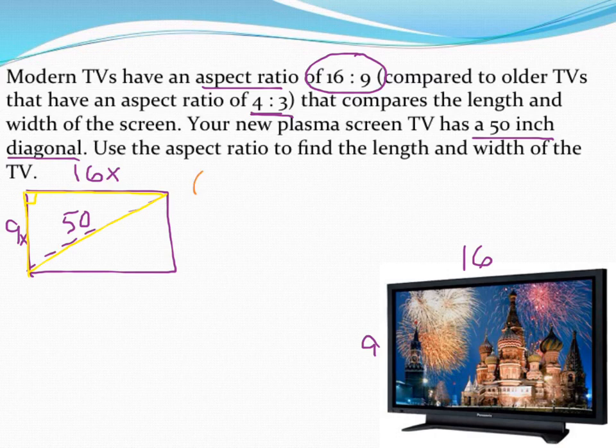So I'm going to go ahead and write down 9X squared. Notice I used parentheses. I have to make sure I square both of those things. Plus 16X squared. And I'll put that equal to the hypotenuse, which in this case is the diagonal of the TV. So 50 squared.